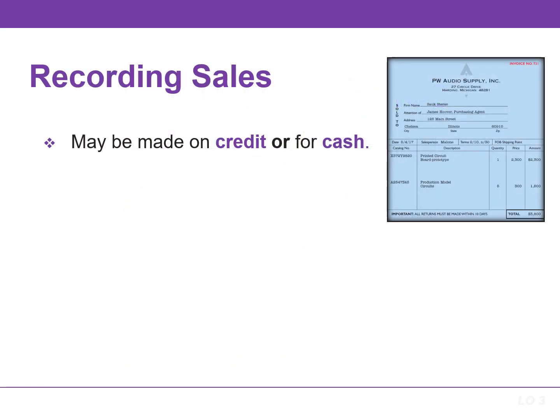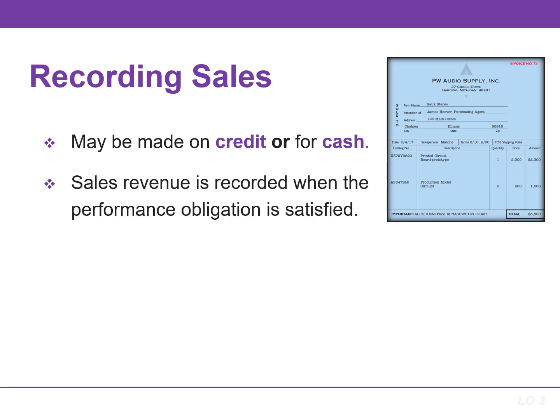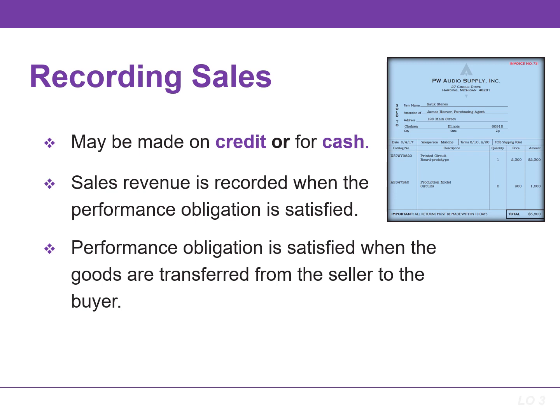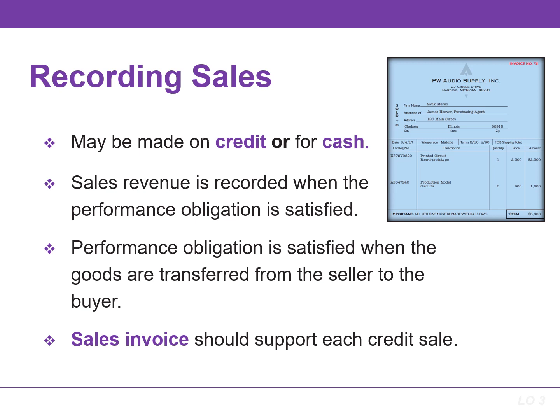Sales may be made on credit or for cash. Companies record sales revenue, like service revenue, when the performance obligation is satisfied. Typically, this occurs when the goods are transferred from the seller to the buyer. Every sales transaction should be supported by a business document that provides evidence of the sale, called a sales invoice.